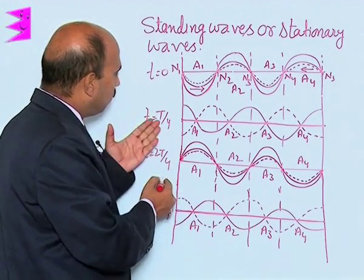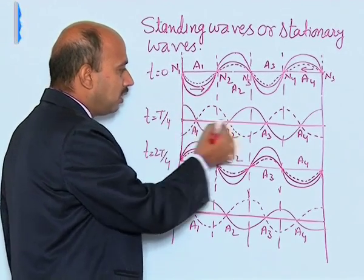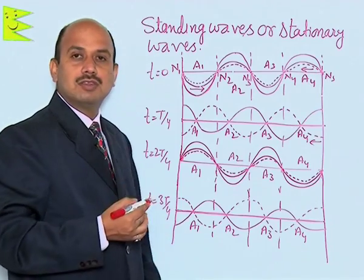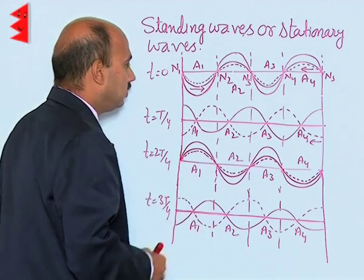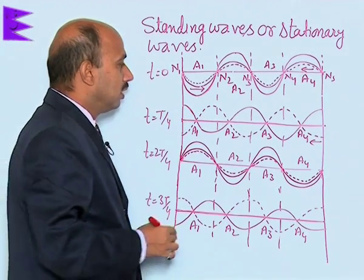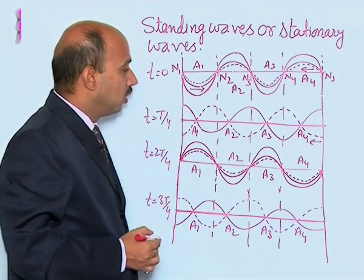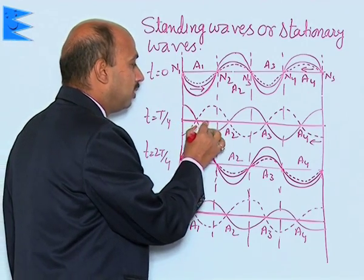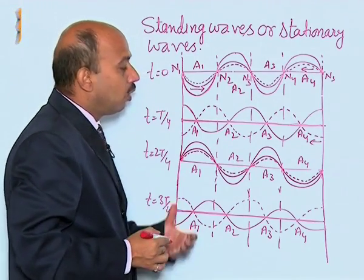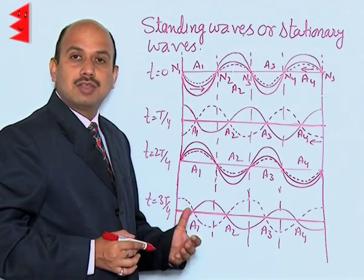At t = T/4, the incident wave has traveled λ/4 to the right and the reflected wave has also traveled λ/4 to the left. Now in the superposition, the crest of one wave falls on the trough of the other wave everywhere. So the net displacement is 0, shown by the thick line, and all particles of the medium are crossing the mean position at the same time.